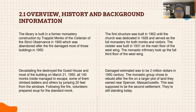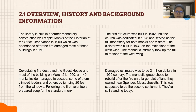The monastic infirmary took up the full third floor of the west wing. A devastating fire destroyed the gas house and most of the building on March 21, 1950. All 140 monks inside managed to escape — some climbed ladders and others jumped 20 feet from the windows. Following the fire, volunteers prepared soup for the stranded. Damage was estimated to be two million dollars. In the 1950s, the monastic group chose to rebuild after the fire on a larger plot of land they owned near Spencer, Massachusetts.